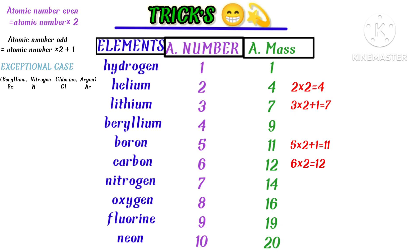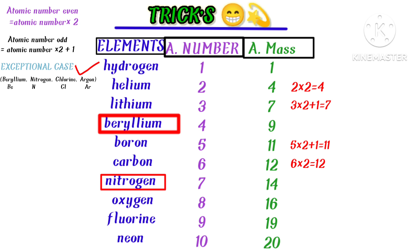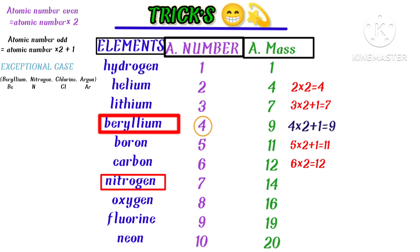Now I'll show how to calculate the atomic mass of the exceptional cases. For beryllium, the atomic number is 4, which is even — but here we apply the odd-number trick in reverse. So: 4 × 2 + 1 = 9. The atomic mass of beryllium is 9.